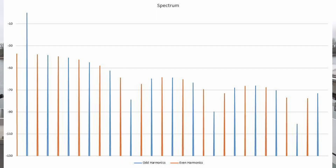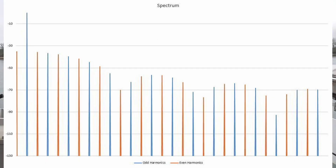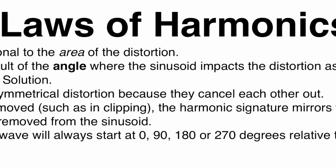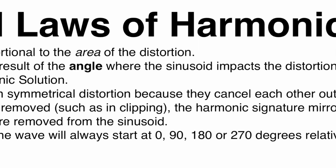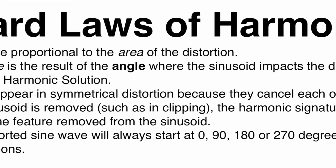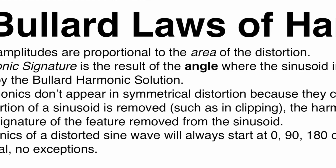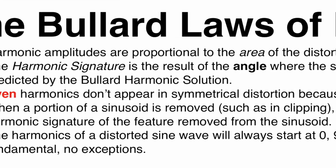What I did was clip it, do the FFT — 45 minutes to an hour and a half later — take a look, and it didn't quite match. So I changed it to another angle, ran the FFT, 45 minutes to an hour and a half later, checked again. Not quite right. I kept doing it. Remember Bullard's Laws of Harmonics Number 2: the angle where the distortion intersects the sine wave is what determines the harmonic signature.